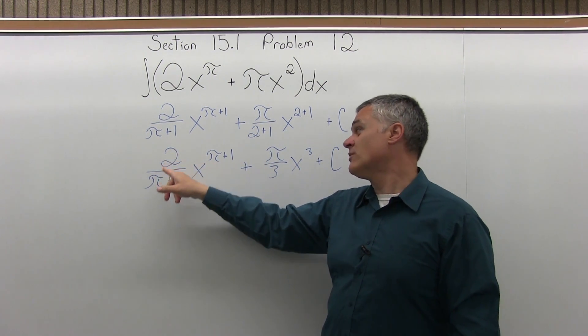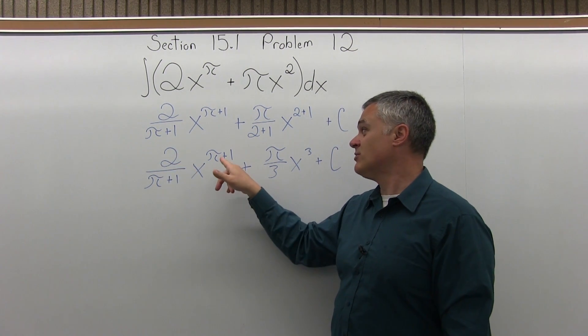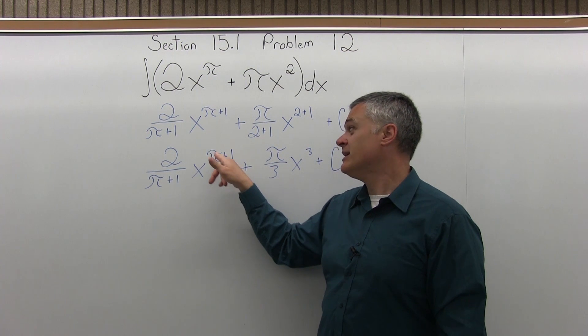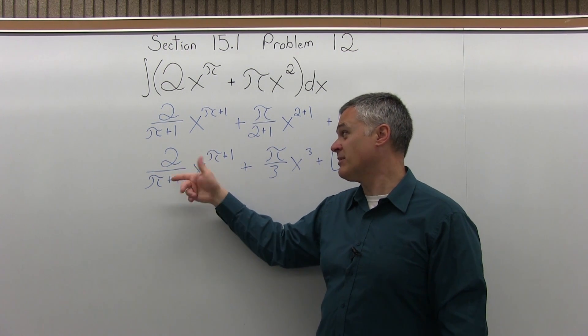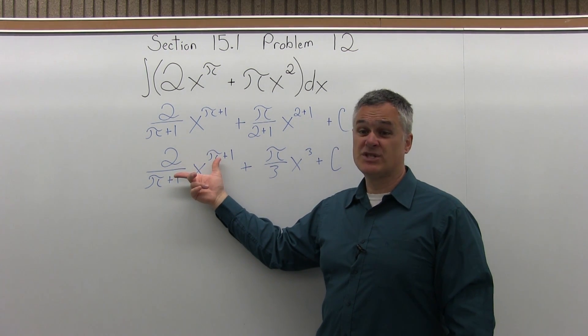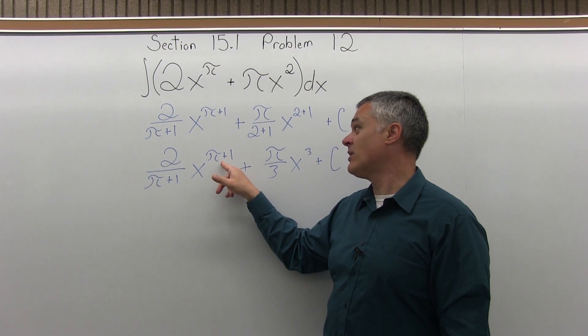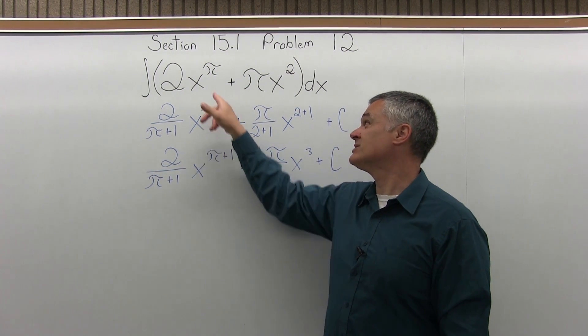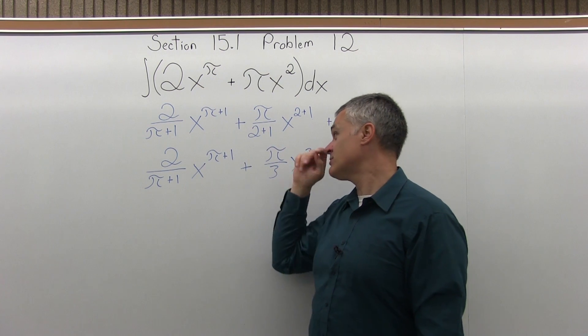So the first piece, 2 over pi plus 1, x to the pi plus 1, if you bring the exponent of pi plus 1 down times the number in front, 2 over pi plus 1, the pi plus 1 is just cancelled, leaving you with 2, x to 1 less power, so pi plus 1, 1 less power is just pi. So it works pretty easily.